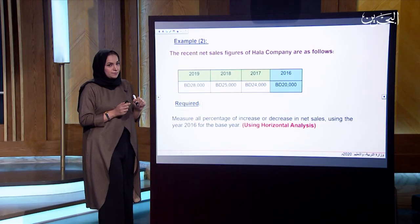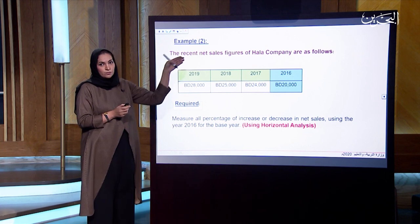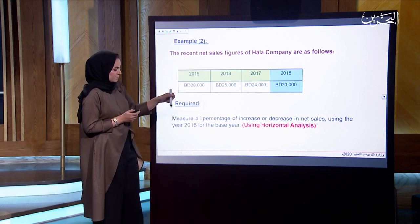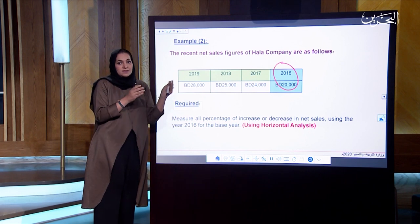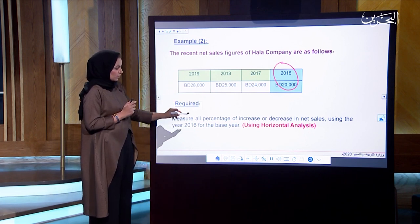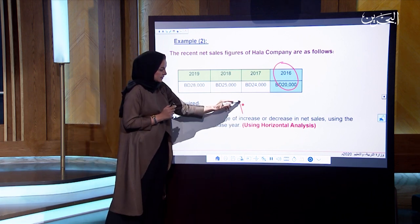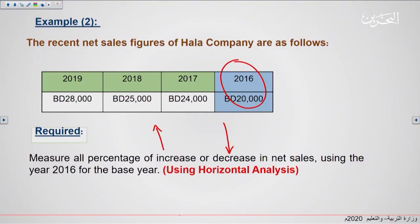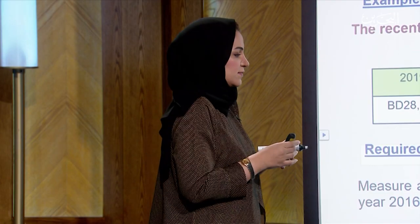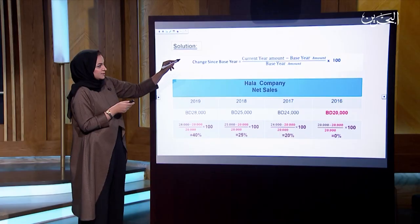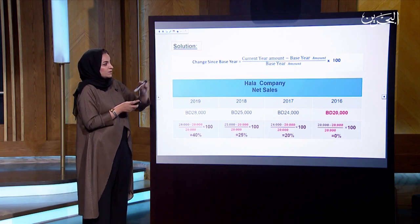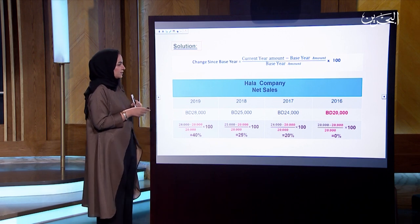Let's look at Example 2. We have net sales figures for four years. The base year is 2016 with a base amount of 20,000. The requirement is to measure the percentage of increase or decrease in net sales using horizontal analysis. Since the question asks for increase or decrease, we apply the second formula: current year amount minus base year amount, divided by base year amount, multiplied by 100.